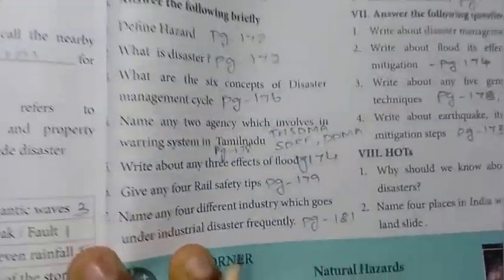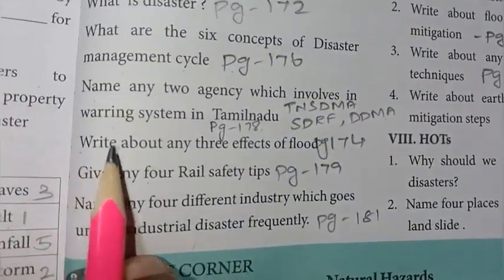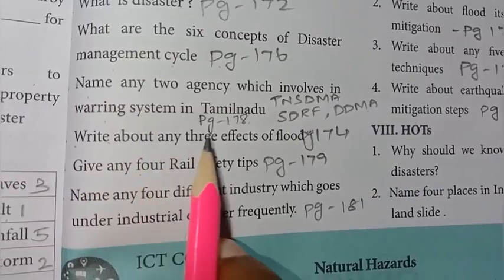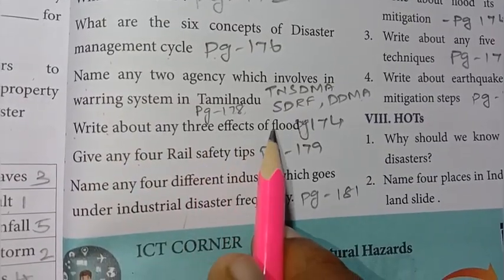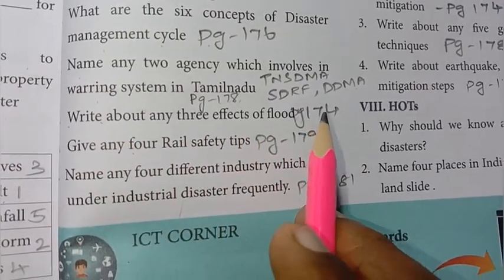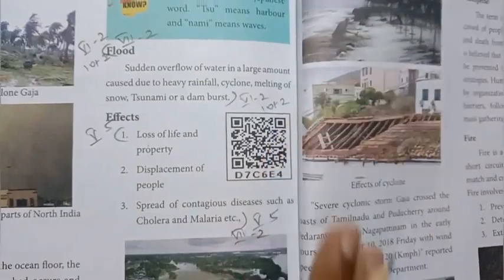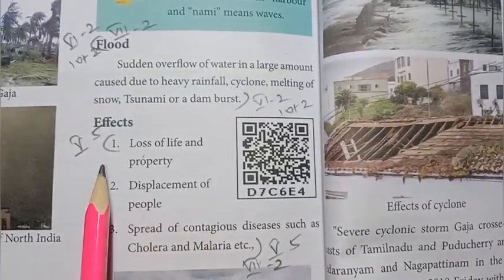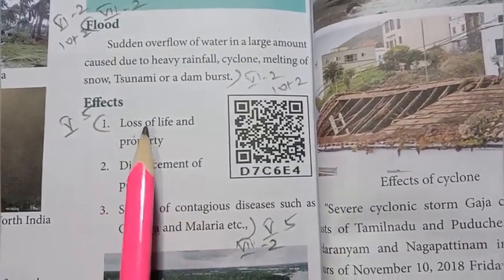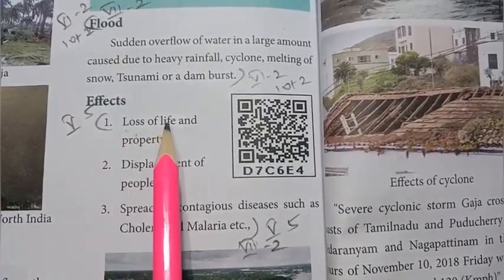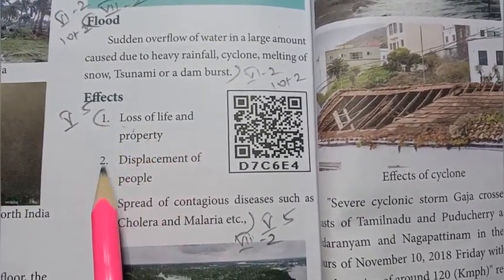Fifth question: write about any three effects of flood. Refer to page number 174. Effects include the loss of life and property. Write three points from that page.